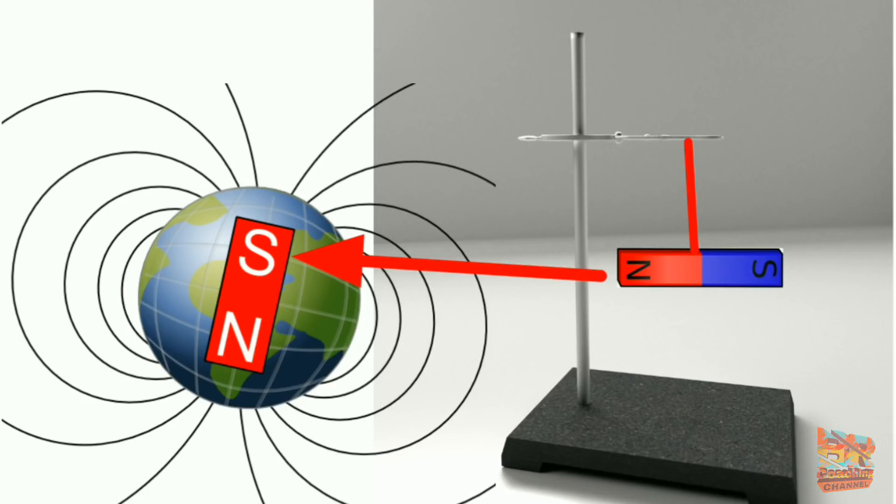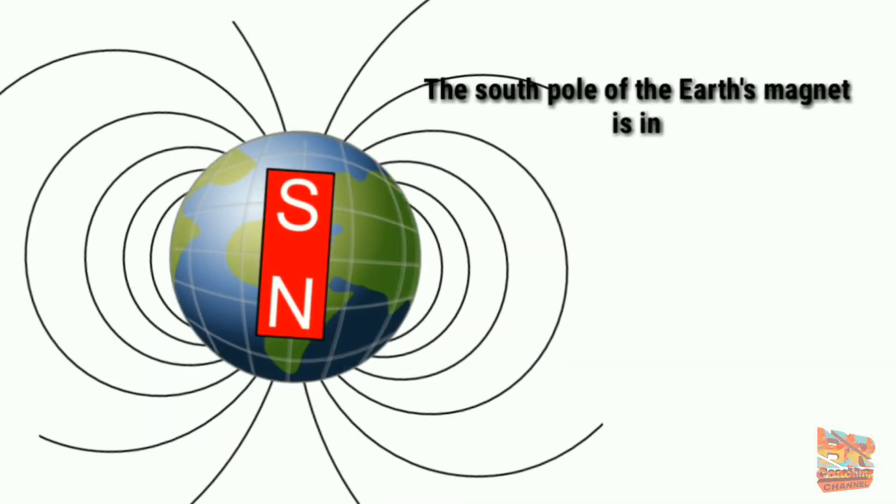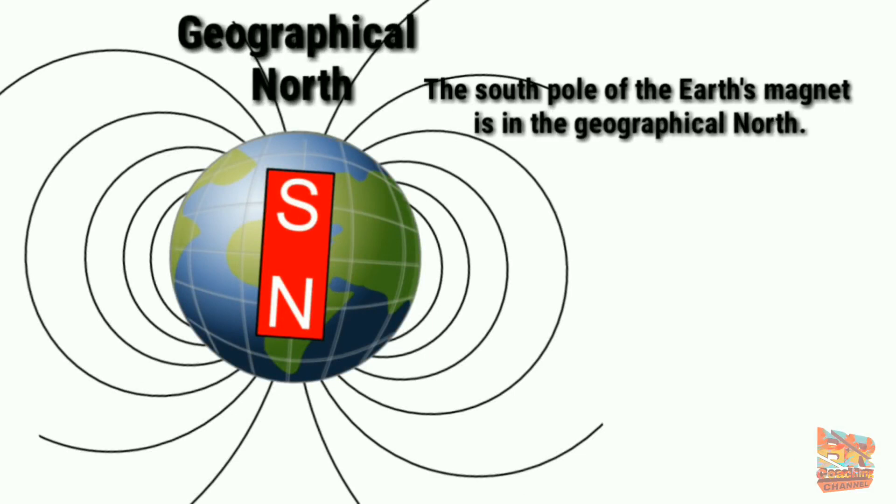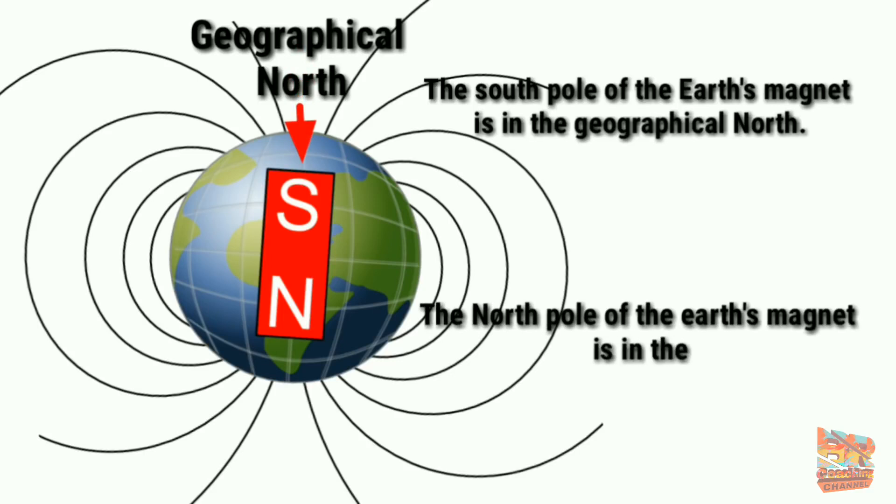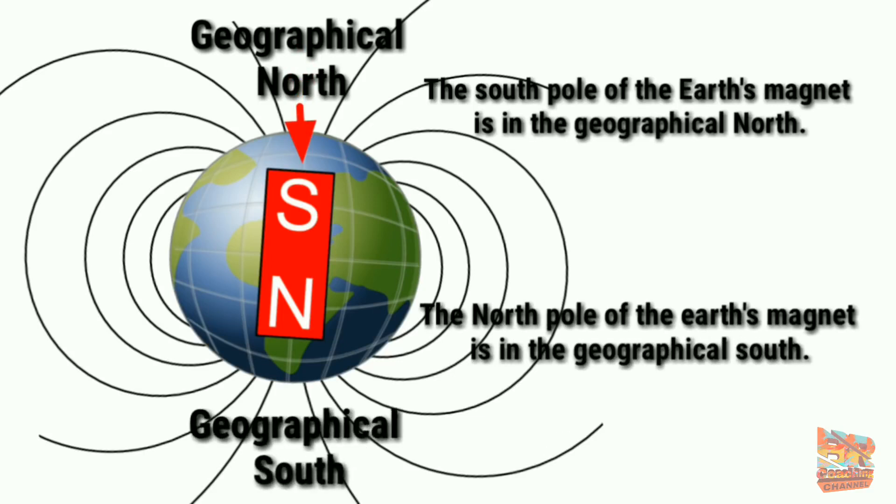Similarly, the south pole of the bar magnet attracts to the north pole of earth's magnet. The south pole of the earth's magnet is in the geographical north. The north pole of the earth's magnet is in the geographical south.